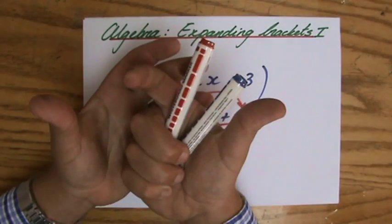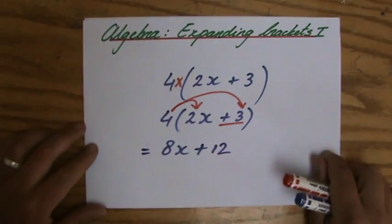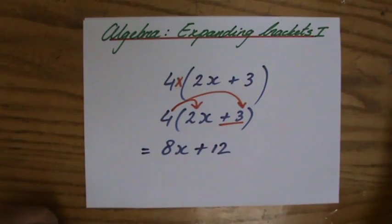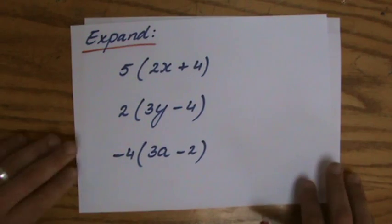So now I have expanded those brackets. Expanding, basically making it bigger if you like. So you do 4 times all the terms inside your brackets. Okay. So I have 3 example questions here for us to try now.